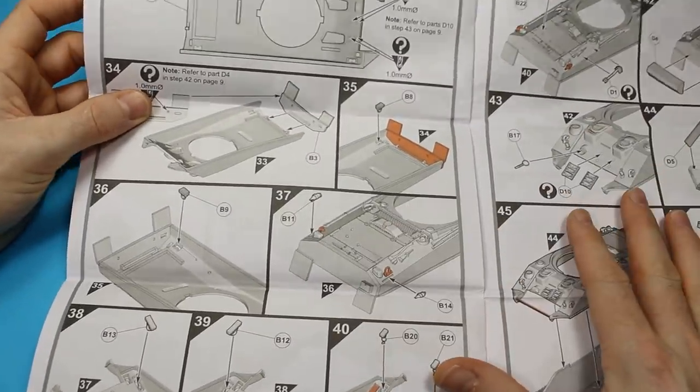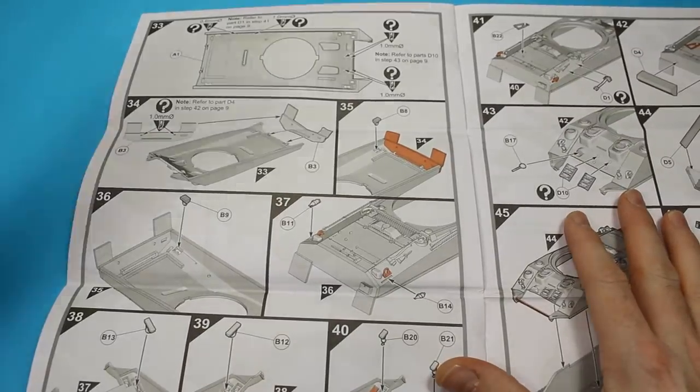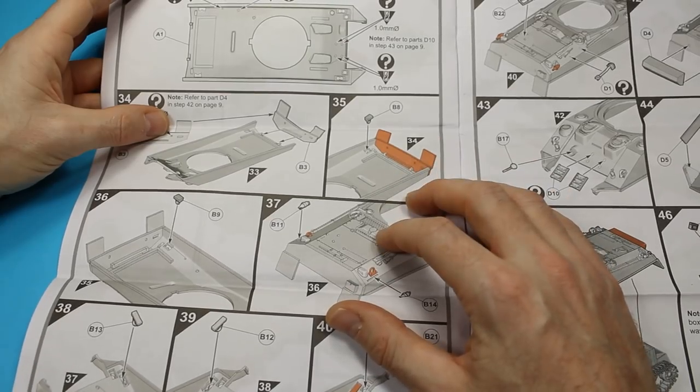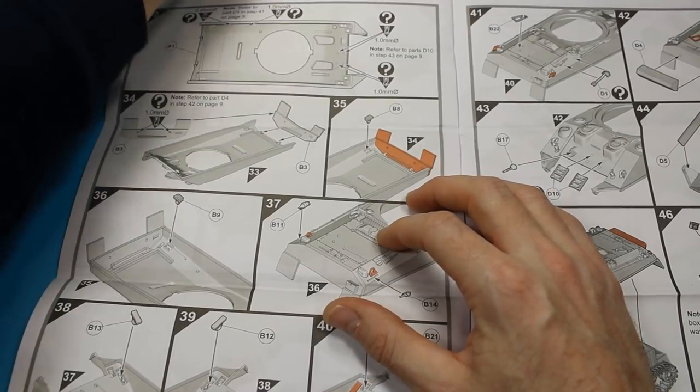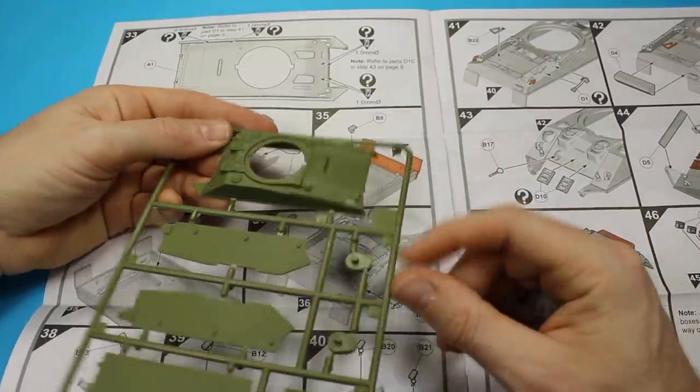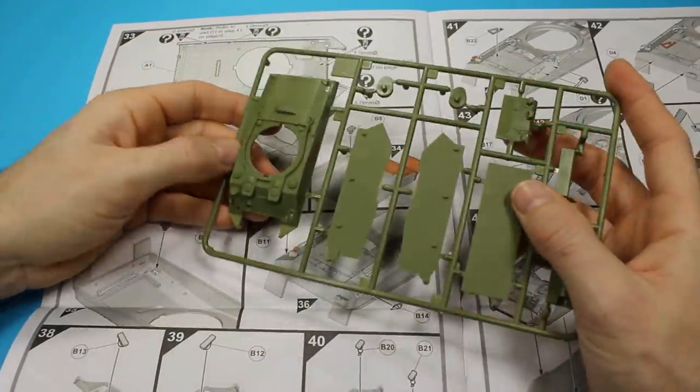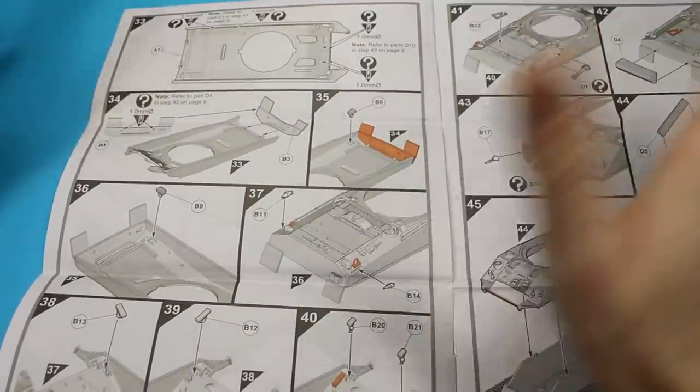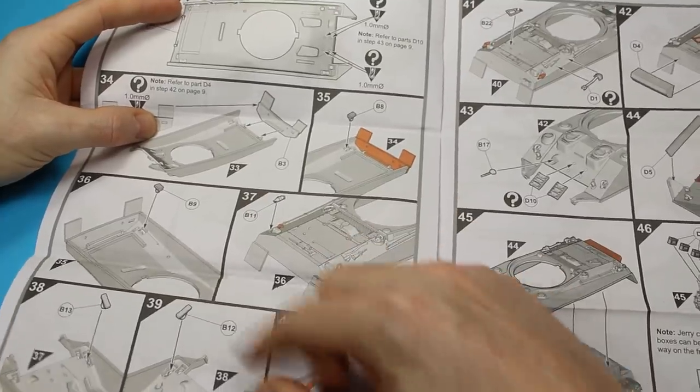Looks like we're going to get different versions of the Sherman here, which is interesting to start with a Firefly, because that uses the M4A2 hull. Is this the extended one? That's the question. I think it is, it's M5C, isn't it? Yeah, so this is the elongated one, so we'll have to see how we go moving forward.